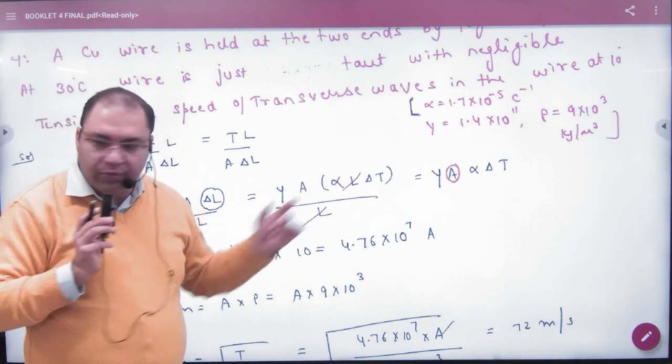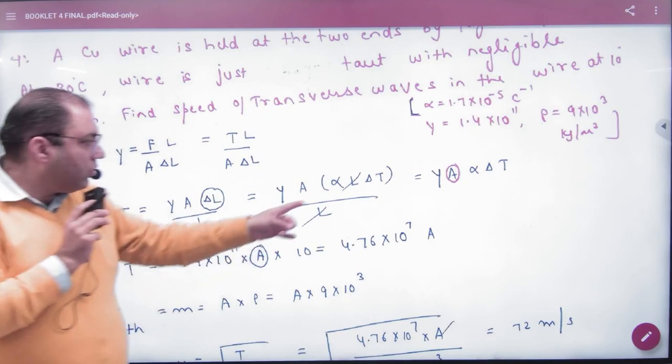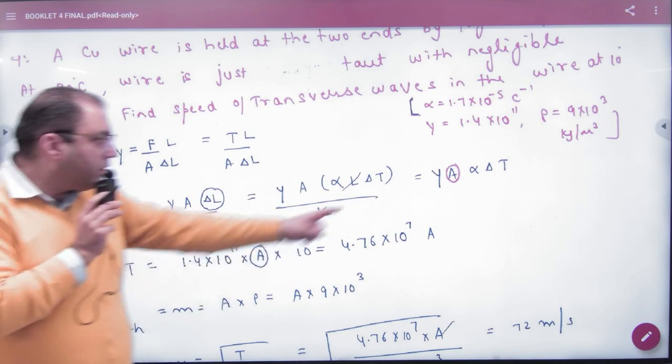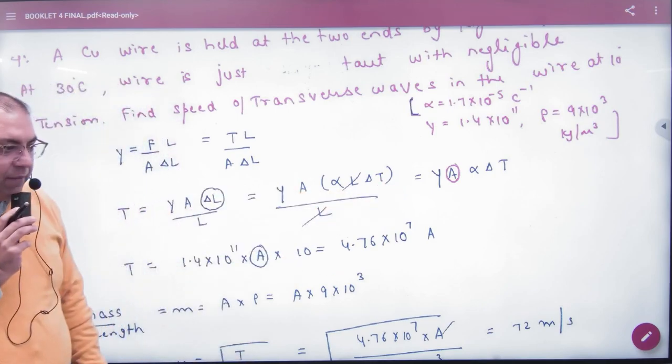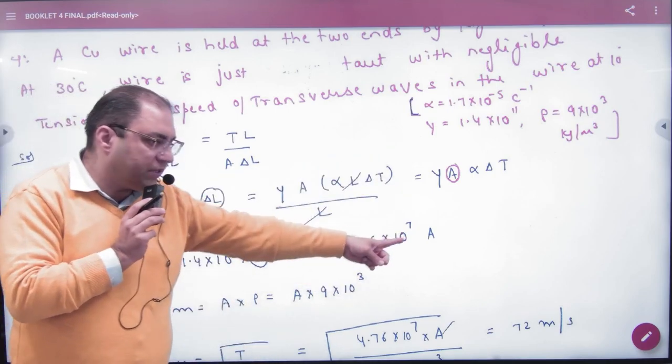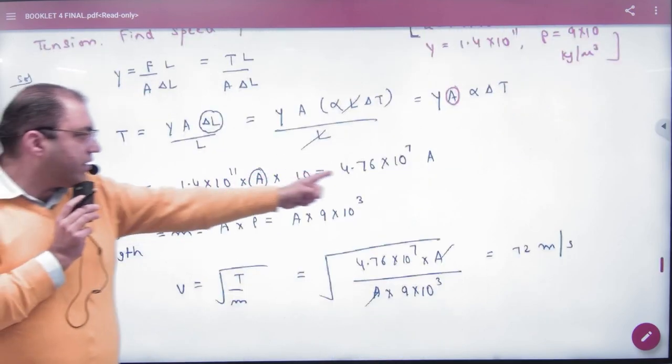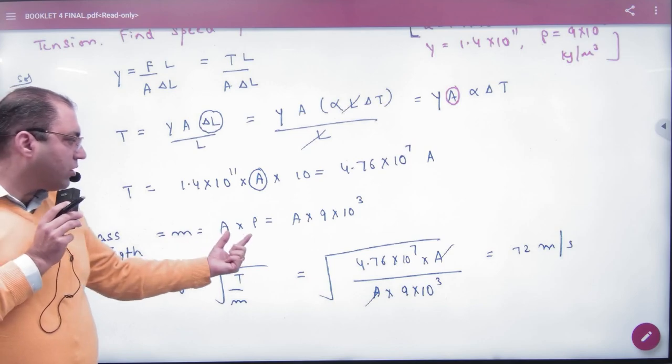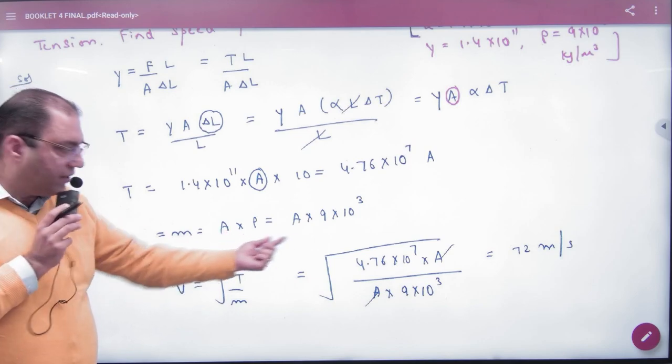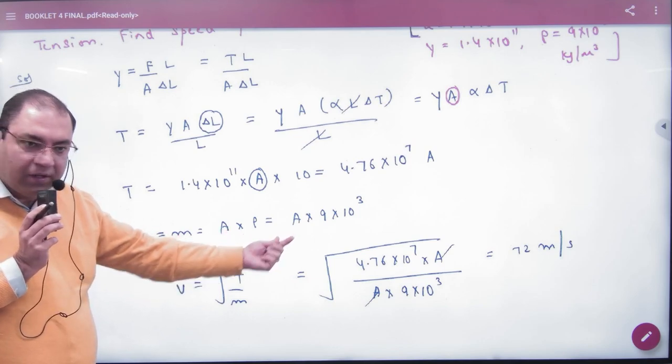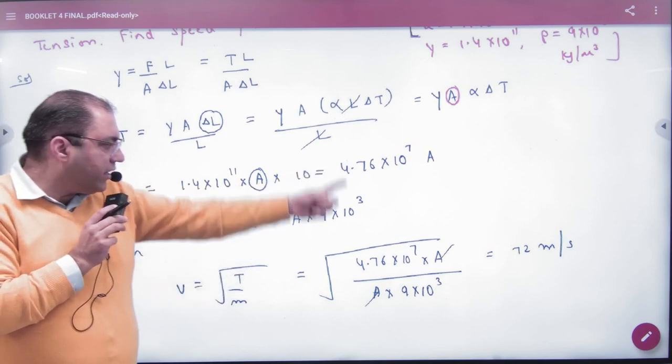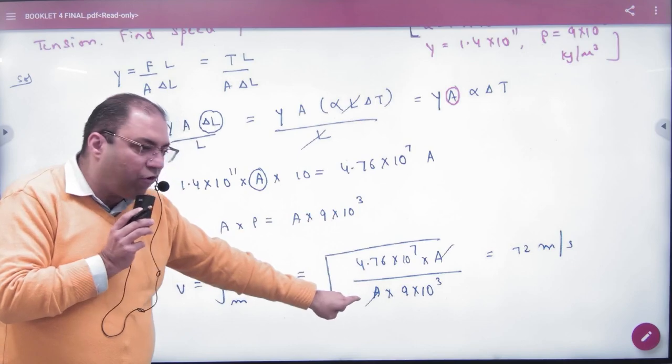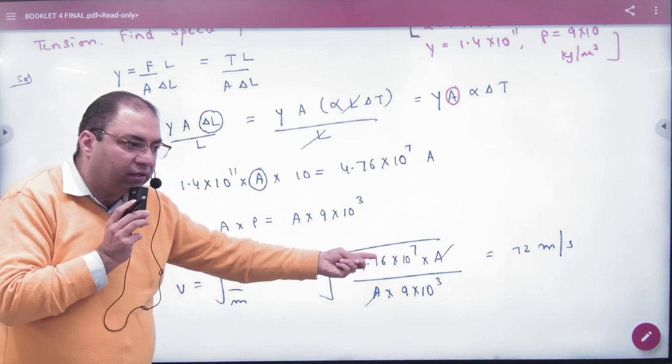Tension ek taraf, baaki terms ek taraf laga le. Ab Y pata hai, length aur area ki adjustment ho jayegi. Ab ek aur cheez nahi pata: delta l. Ab delta l thermal expansion ke chapter se aayega, kya tha: alpha into l into delta T, yaad hai. To l se l cancel, to kya aagya: delta T aagya. To meri ko is question mein Y pata hai, alpha pata hai, delta T pata hai, area nahi pata. To maine tension ko area ki form mein nikaal liya. Aur mu, mass per unit length ka short cut, maine pataaya: area into density. Area to pata nahi.